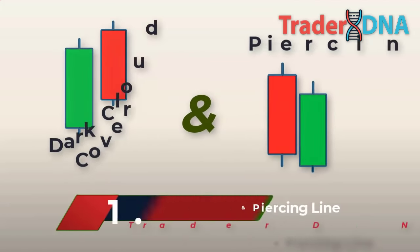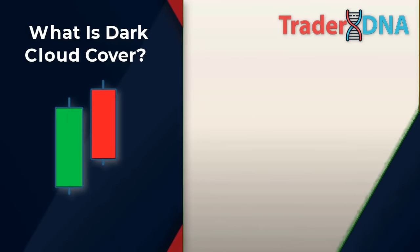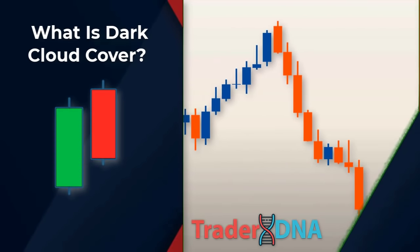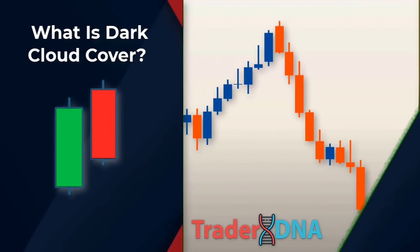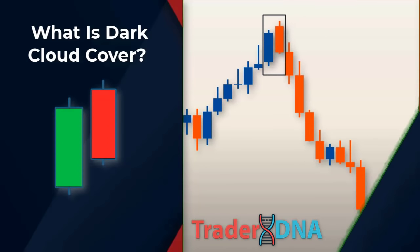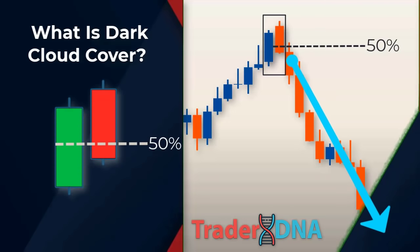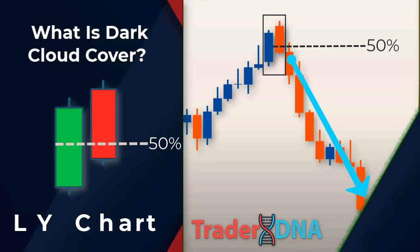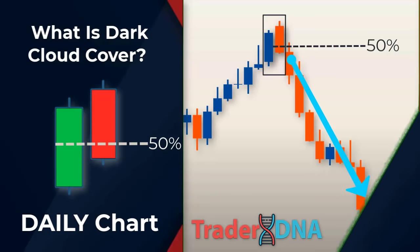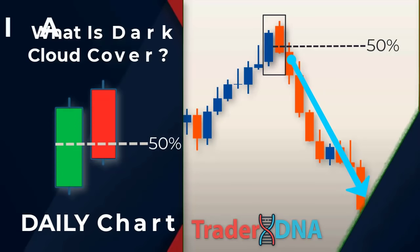First: Dark Cloud Cover. The dark cloud cover pattern is a candlestick pattern that signals a potential reversal to the downside. It appears at the top of an uptrend and involves a large bullish candle followed by a bearish candle that creates a new high before closing lower than the midway point of the previous bullish candle. It is especially significant on higher time frame charts such as a daily chart; on lower time frames its significance is considerably reduced.